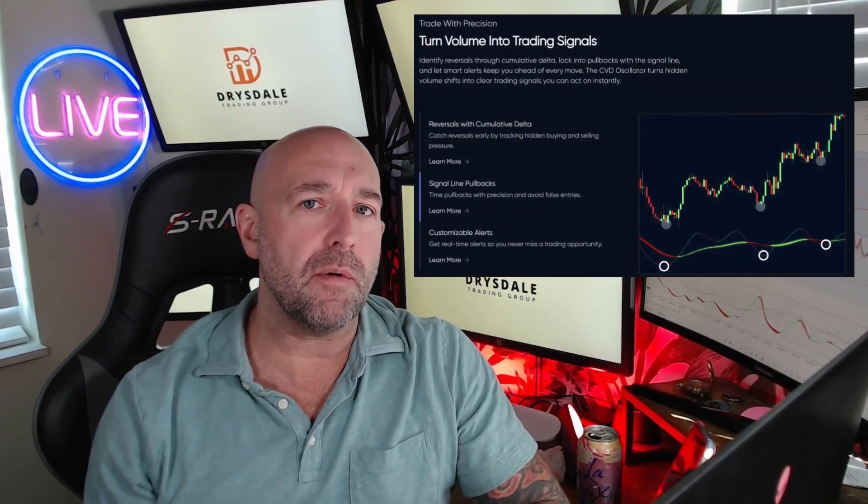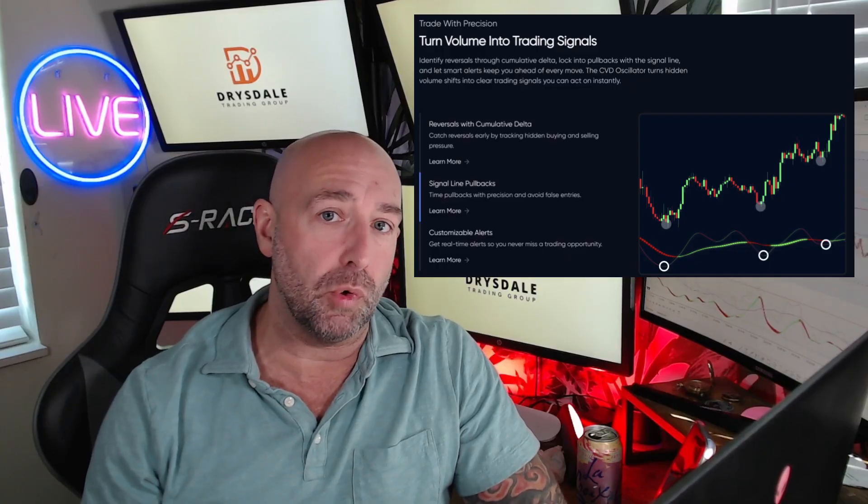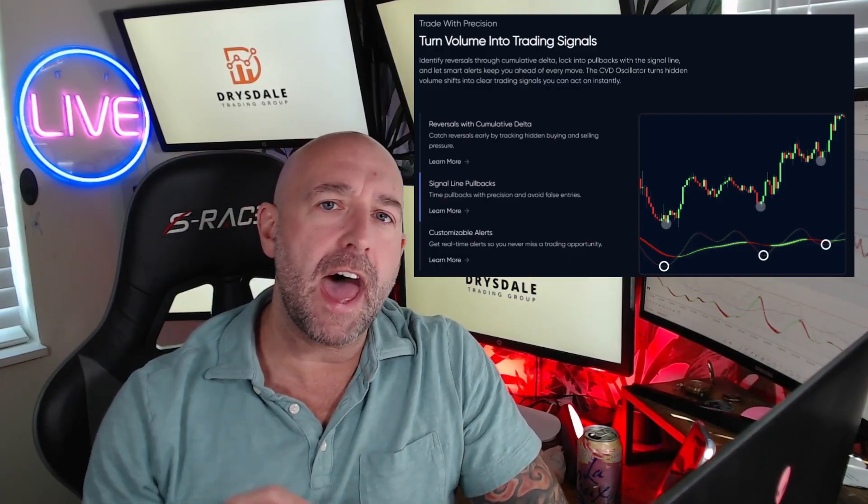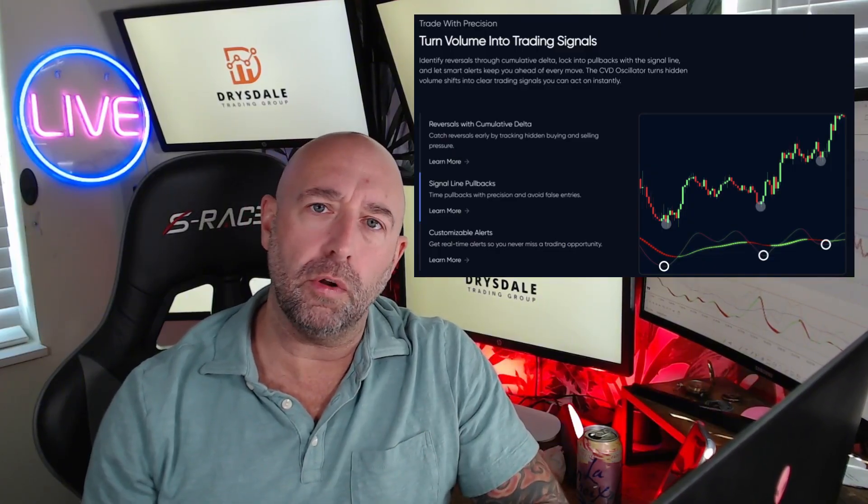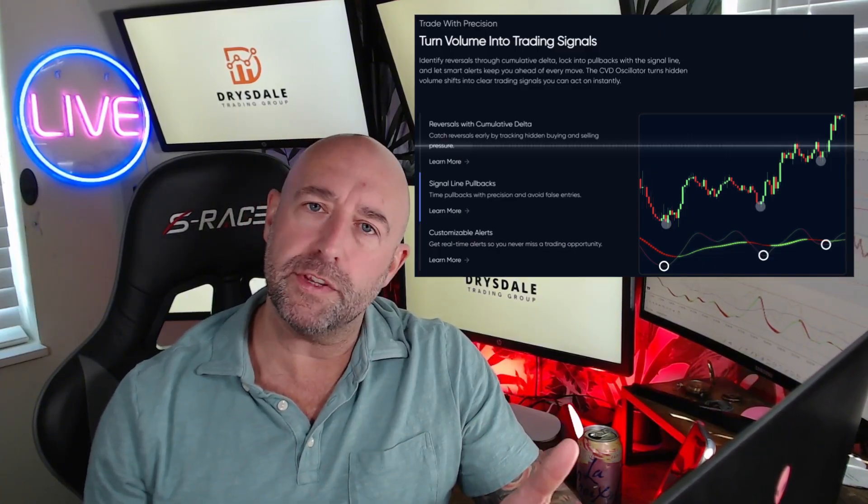If you've ever wondered why a breakout suddenly fails or what separates a real move from a fake one, that answer is usually hidden in the order flow. The CVD oscillator that we've just developed within the VWAP Wave System Toolkit is built to expose that exact story — who is really in control, the buyers or the sellers? In this video, I'm going to show you exactly how it works, how to interpret it, and how to use it across all four VWAP Wave System core setups, so you can learn to trade with the flow of volume, not against it.